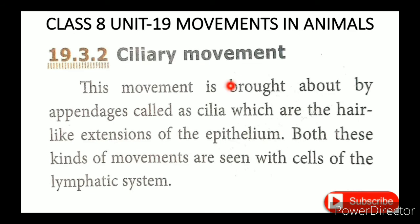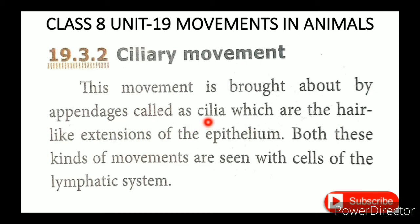The 2nd type is ciliary movement. This movement is brought about by appendages called cilia, which are hair-like extensions of the epithelium. These appendages extend from the body's epithelial surface — the hair-like structures are called cilia, and their movement is called ciliary movement.